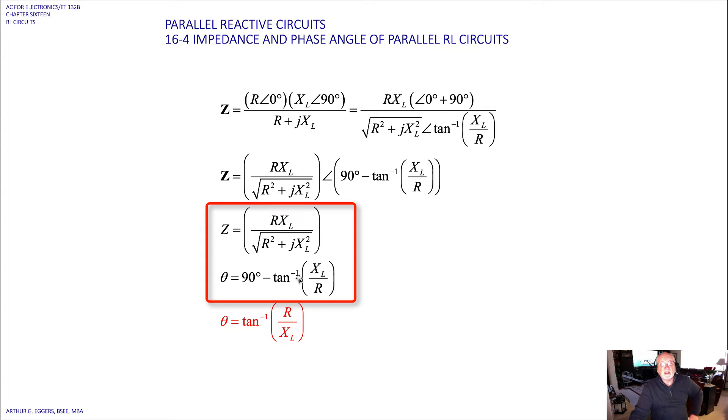So our two components then become the product over the sum relationship, and then our difference in the angle as we remove minus inverse tangent or whatever that value becomes. So the angle becomes inverse tangent R over L. Notice we did an inversion here, a flip, because we are basically just changing the sign.